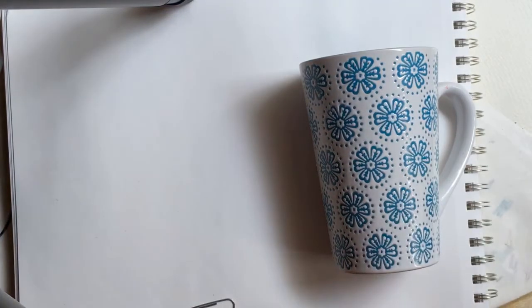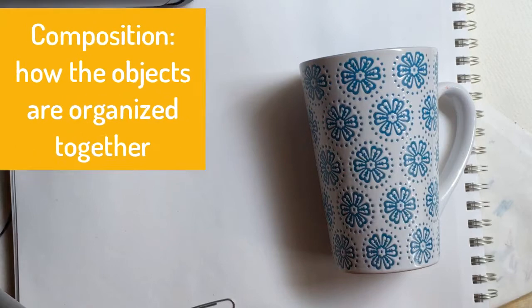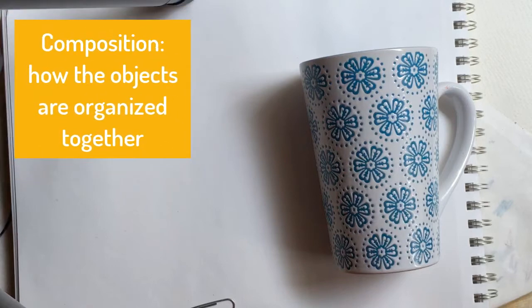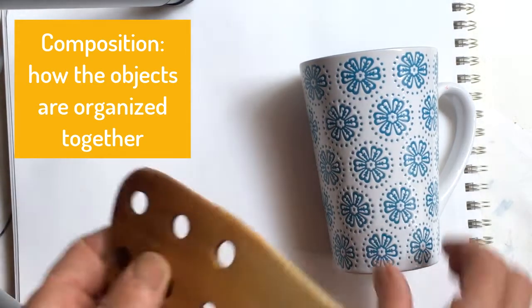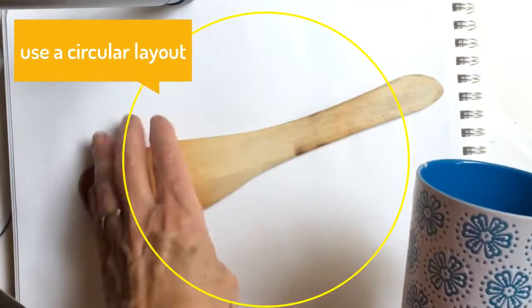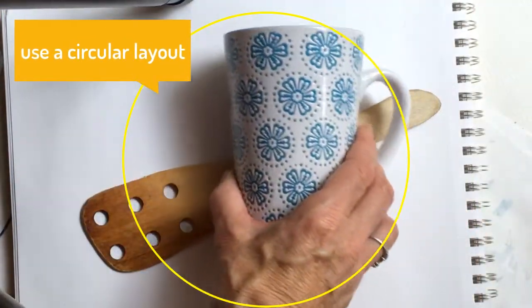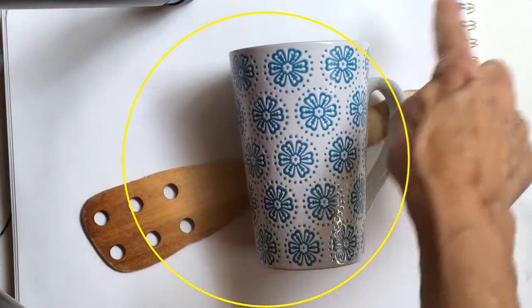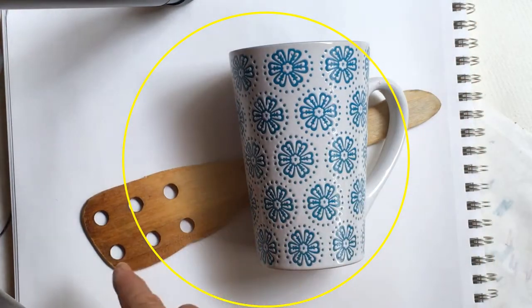So let's get started on a composition. A composition is the way we organize our objects on our paper or an artwork. We want to make our objects in a circular type of layout. That will keep the viewer's eye on the artwork and not wander off the page.